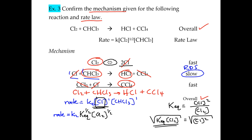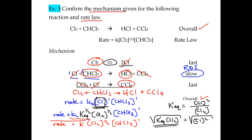Carrying over [CHCl₃]¹ and grouping both K values (K2 and K_eq^(1/2)) into one overall K, the final rate law is: rate = K × [Cl₂]^(1/2) × [CHCl₃]¹. This rate law correctly matches the given rate law shown at the top of the page, confirming that the proposed mechanism is correct.